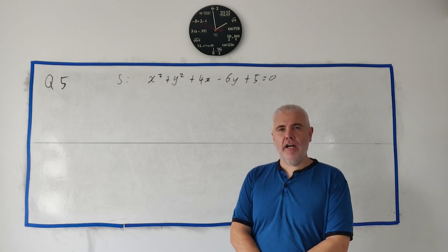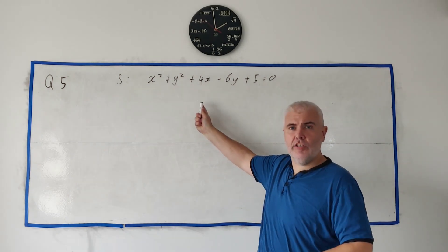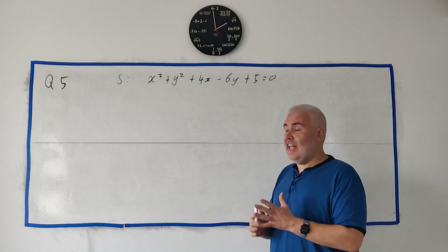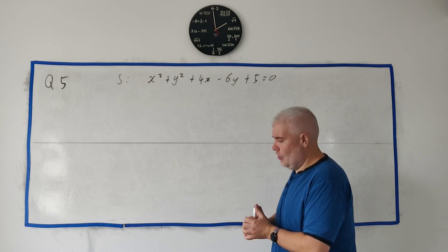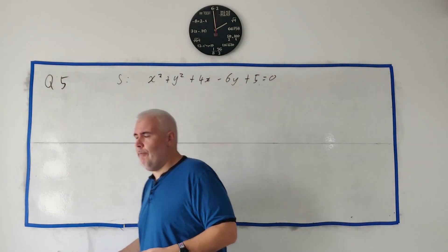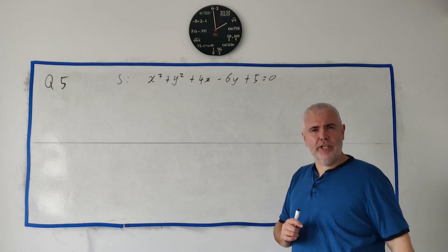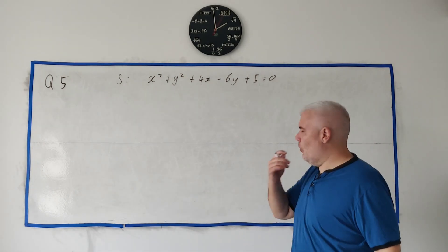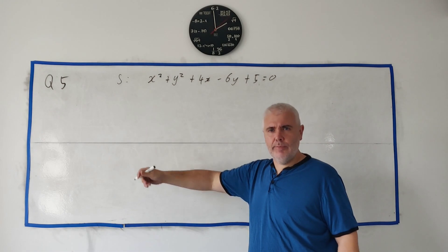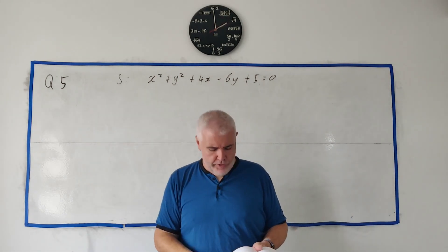Question 5 starts off by giving you the equation of a circle and simply asking you to write down the centre and the radius of the circle. This should be a fairly straightforward question. I'm going to make it a little more difficult by showing you a slightly different way to do it, but I'll show you the fast and easy way first.